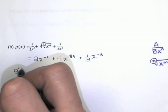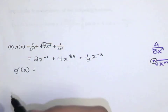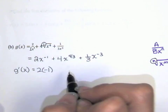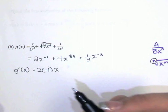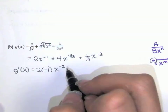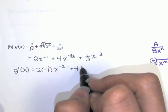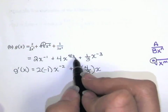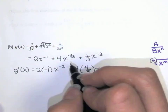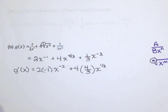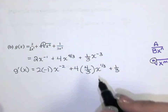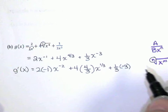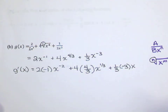Now I'm ready to compute the derivative, so I write g prime of x. I bring the constant down, and the derivative of x to some power is that power times x to the one less power — negative 1 minus 1 is negative 2. Then I bring my constant down and bring my power down using the power rule again, multiplying by x to the one less power: 4 thirds minus 1 is 4 thirds minus 3 thirds, which is 1 third. And over here I bring the 1 third down, then the negative 3 down, multiplying by x to the one less power — negative 3 minus 1 is negative 4.